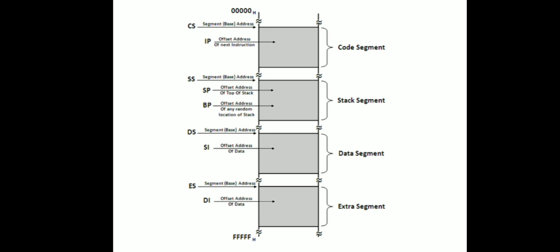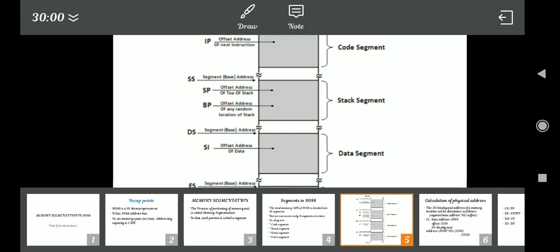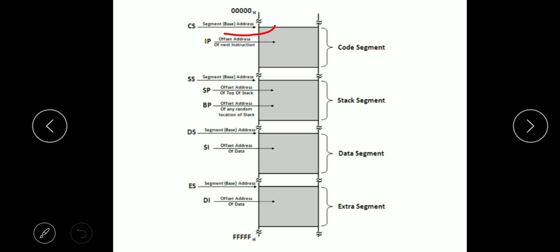This is the pictorial representation of segmentation in the 8086 processor. The memory addresses range from 00000 to FFFFF — five hex digits representing a 20-bit address space, covering all 20-bit memory locations.